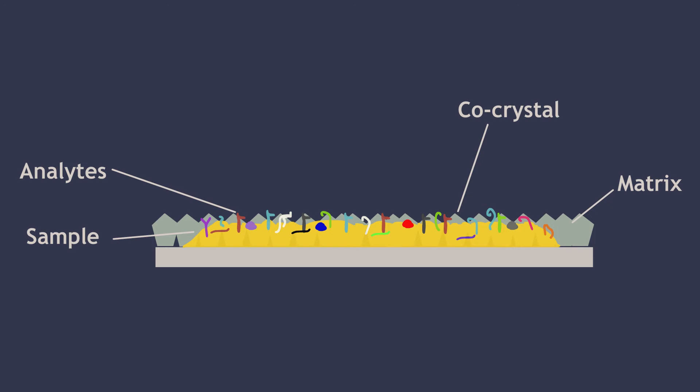The matrix selectively crystallizes with molecules of certain size range or characteristics. Thus, varying its composition can narrow down the window to find your molecules of interest.